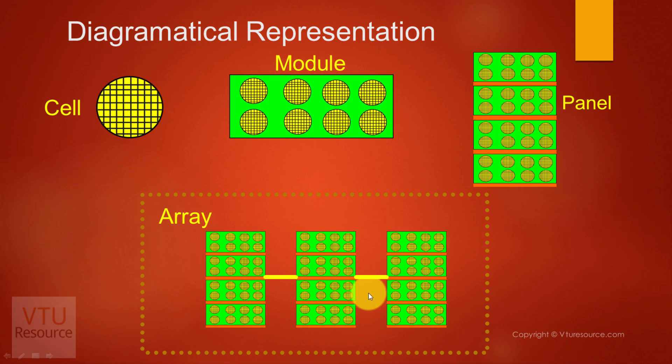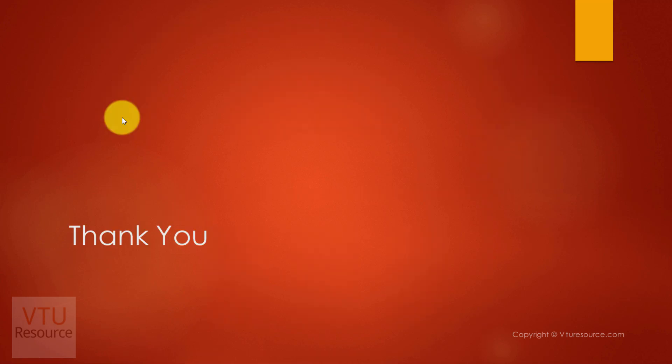Arrays are used in solar power generation. The panel is used in traffic signals, and solar cells are used in watches, calculators, etc. Thank you.